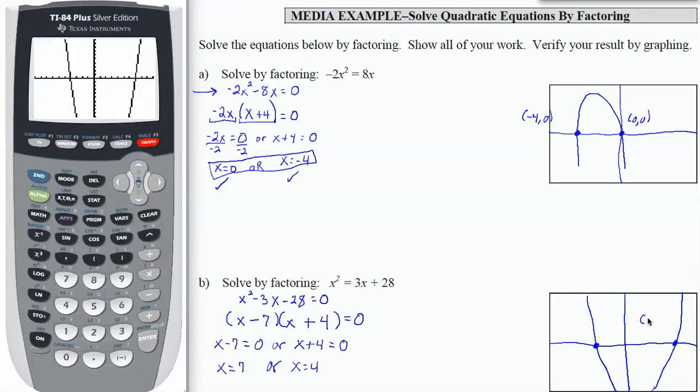So what I'm betting is that this ordered pair over here is 7, 0. And what did I do wrong? This should be a negative 4. If I subtract x plus 4 equals 0, so x equals negative 4. Let's make that correction. And I can tell by my graph. So you can see if you make a mistake here, your graph should help you verify.